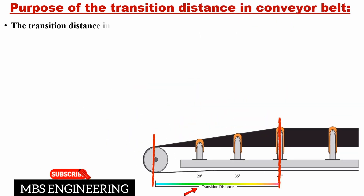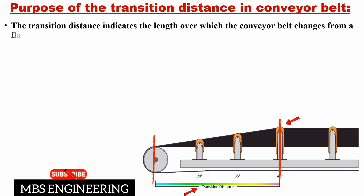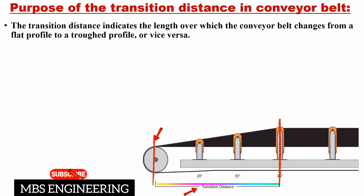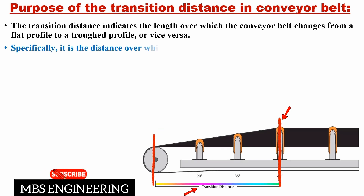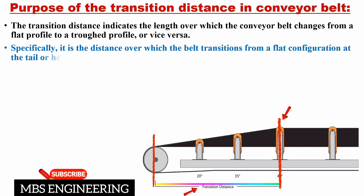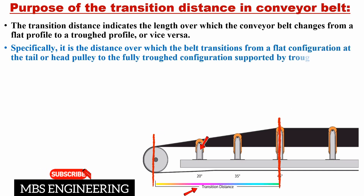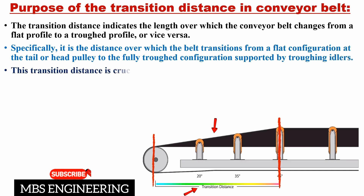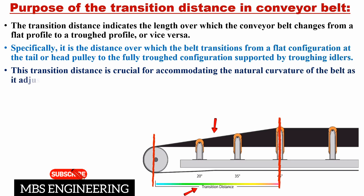The transition distance indicates the length over which the conveyor belt changes from a flat profile to a troughed profile, or vice versa. Specifically, it is the distance over which the belt transitions from a flat configuration at the tail or head pulley to the fully troughed configuration supported by troughing idlers. This distance is crucial for accommodating the natural curvature of the belt as it adjusts to different profiles.